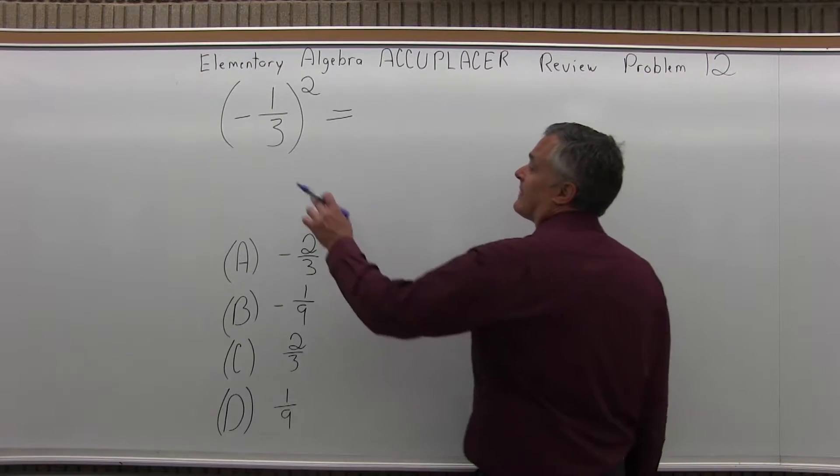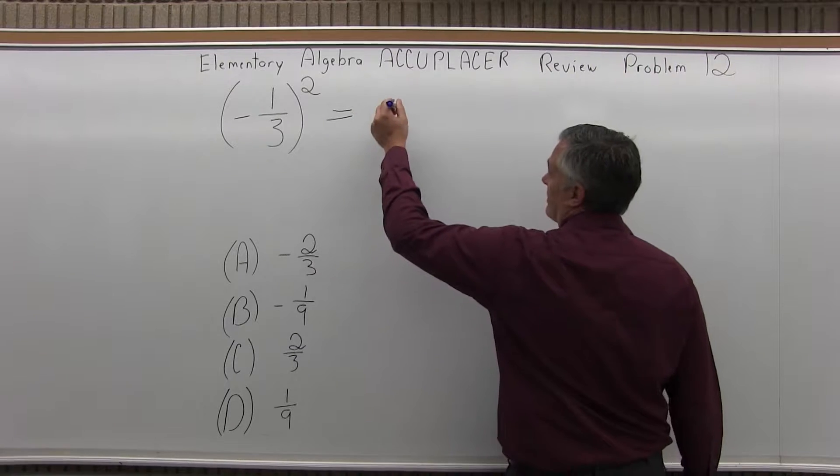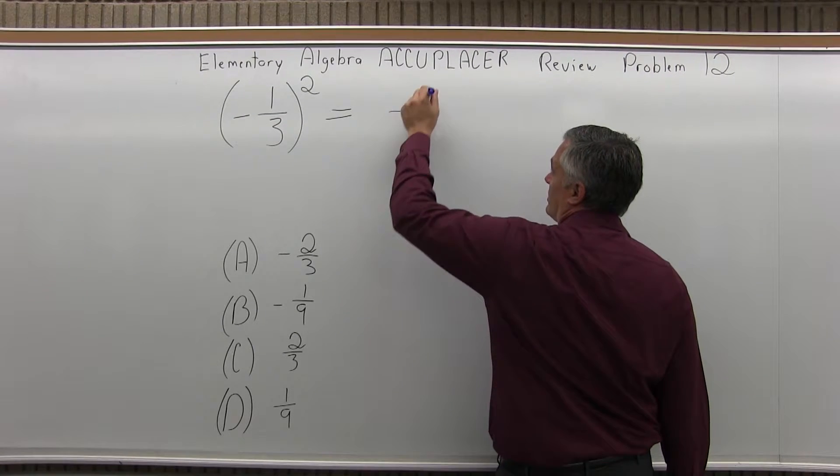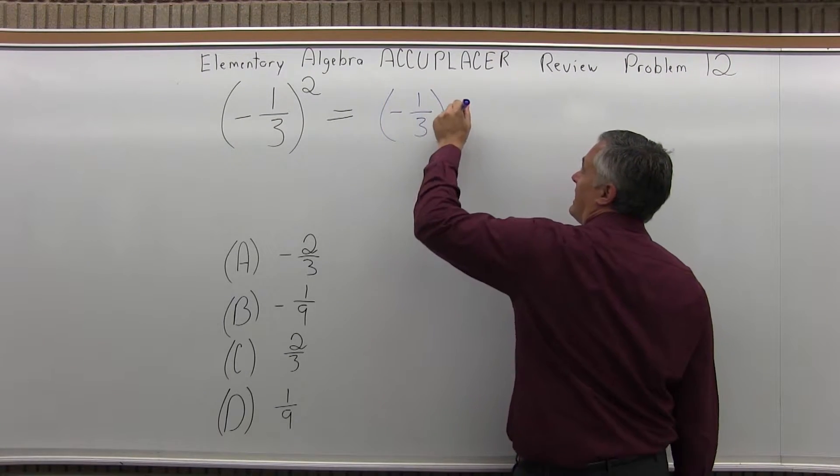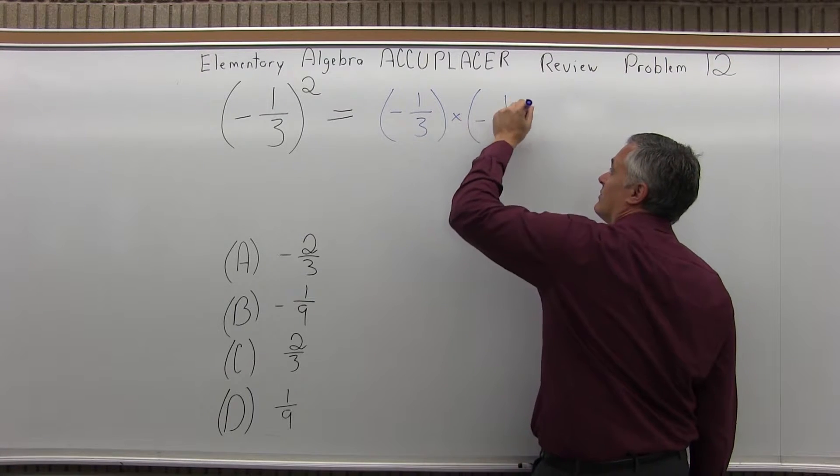So you have something to the second power, it's that value times itself. So it's negative one-third times negative one-third.